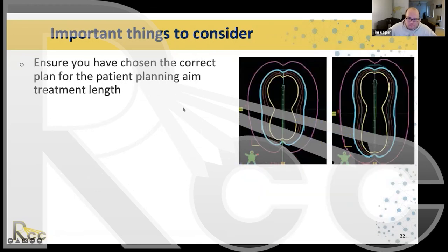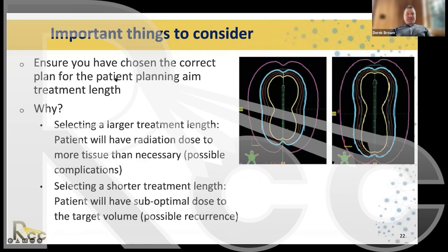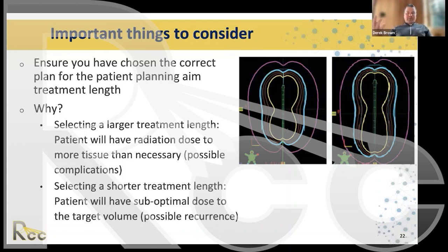Just as with cylinder diameter, we must ensure the planning aim treatment length matches the desired length. Selecting a shorter treatment length results in suboptimal dose to the patient; selecting a longer treatment length causes overdose. This is equally as important as selecting the correct cylinder diameter.